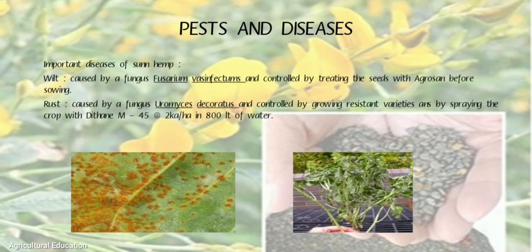Pests and Diseases: Important diseases of sunhemp are wilt and rust. Wilt is caused by the fungus Fusarium vasinfectum and is controlled by treating the seeds with Agro-san before sowing. Rust is caused by the fungus Uromyces decoratus and is controlled by growing resistant varieties and by spraying the crop with Dithane M-45 at the rate of 2 kg per hectare in 800 liters of water.